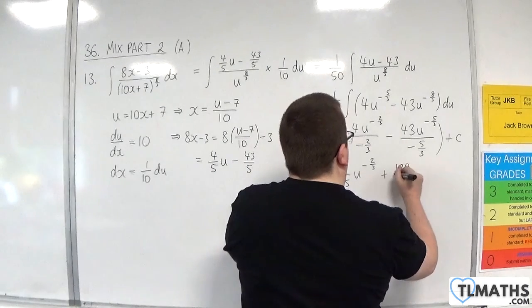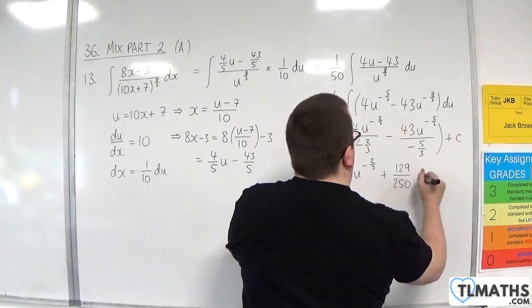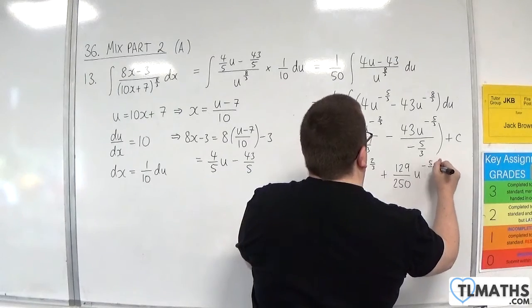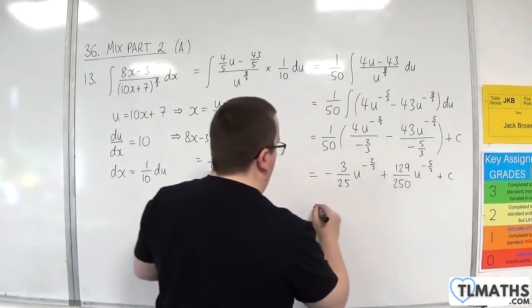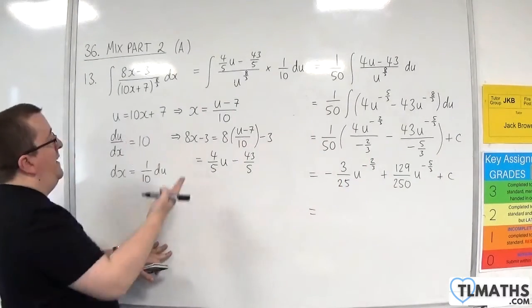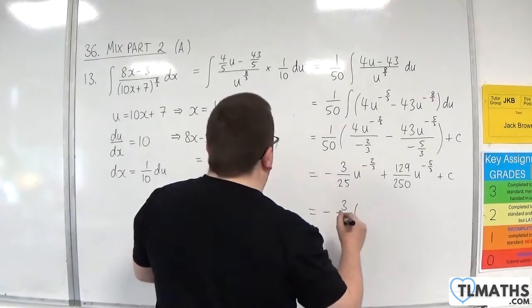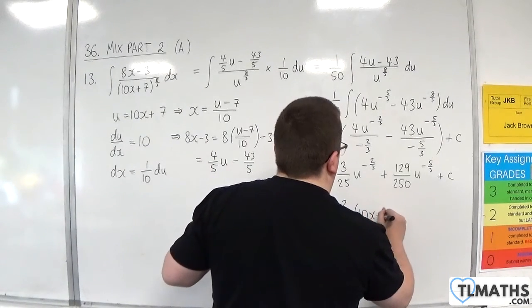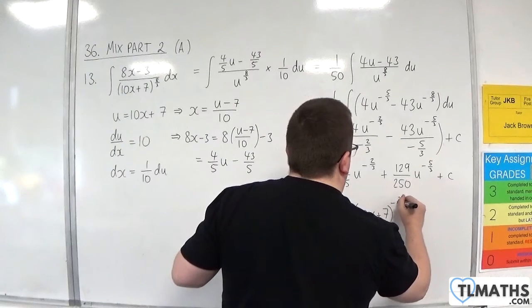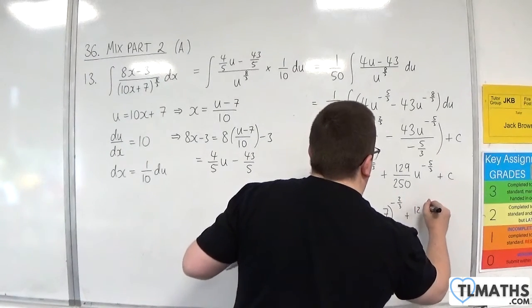So plus 129 over 250u to the minus 5 thirds plus c. Now we can put our u back in, so minus 3 over 25, 10x plus 7 to the minus 5 thirds, plus c.